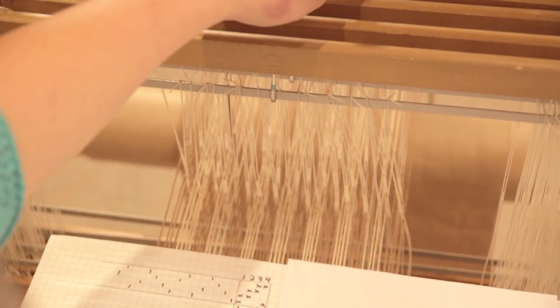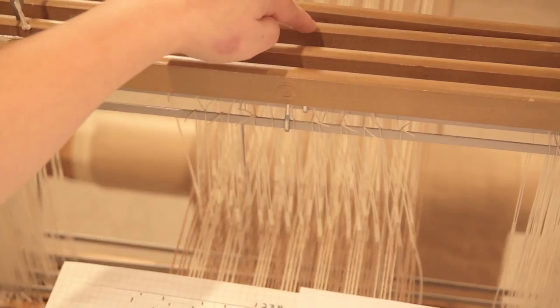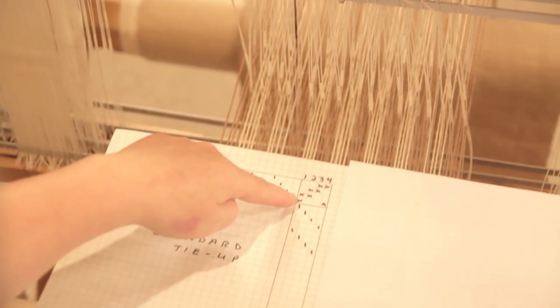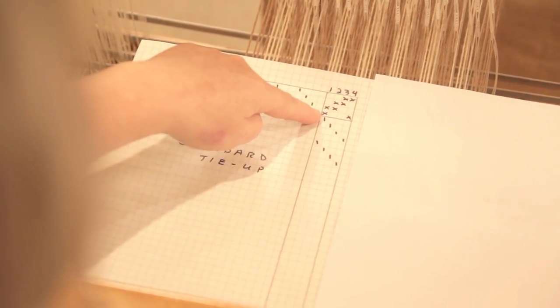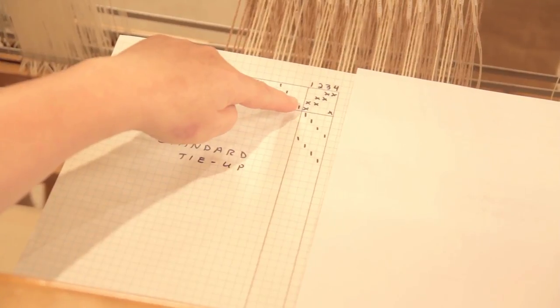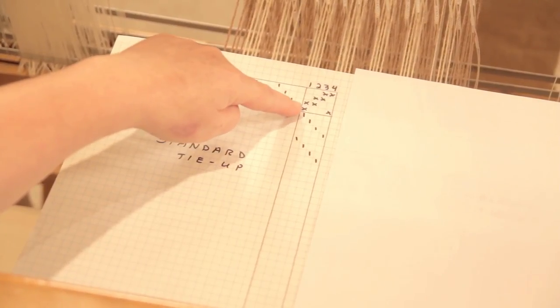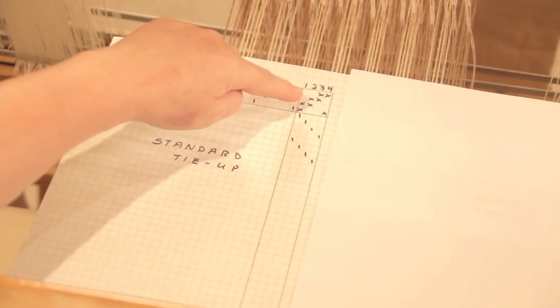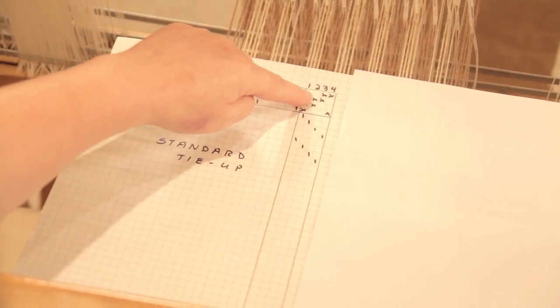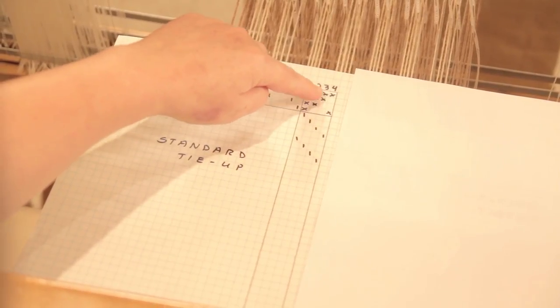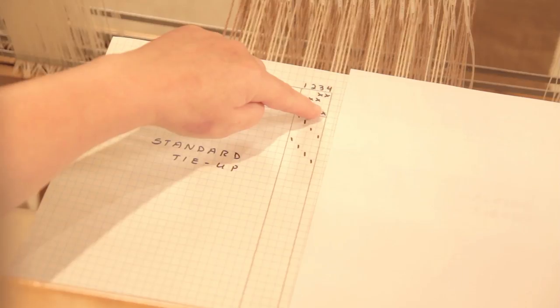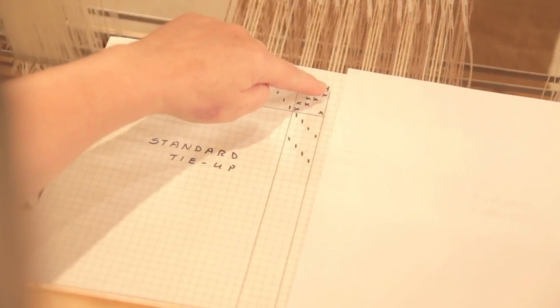One, two, three, four, two, one, four, three, and so forth. The tie-up here: the first treadle to my left underneath is tied up to shafts one and two. The next one is tied to two and three. The next one is tied to three and four. And the last one is tied to shafts one and four.